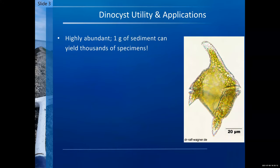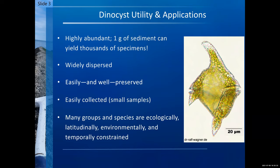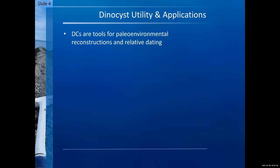Dynocysts are highly abundant — they can be found by the thousands in just one gram of sediment. They're widely dispersed, easily and well-preserved, easily collected. You only need small samples, and many groups and species are ecologically, latitudinally, environmentally, and temporally constrained. Furthermore, dynocysts are tools for paleo-environmental reconstructions and relative dating.